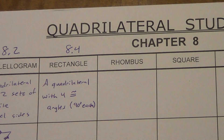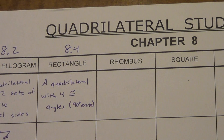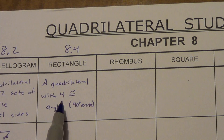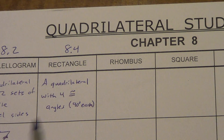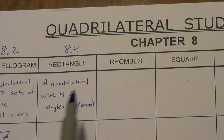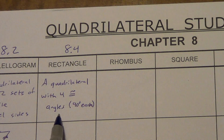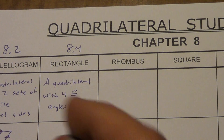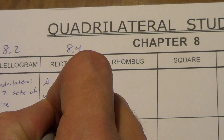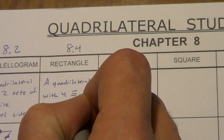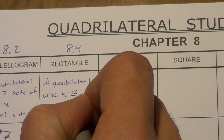Keep in mind, if we think back to lesson 8.3, a rectangle has to be a parallelogram. If it's got four congruent angles, then the opposite angles are congruent, and if the opposite angles are congruent, then it has to be a parallelogram. So it is a quadrilateral with four congruent angles, but it's also a special kind of parallelogram — it has to be a parallelogram.